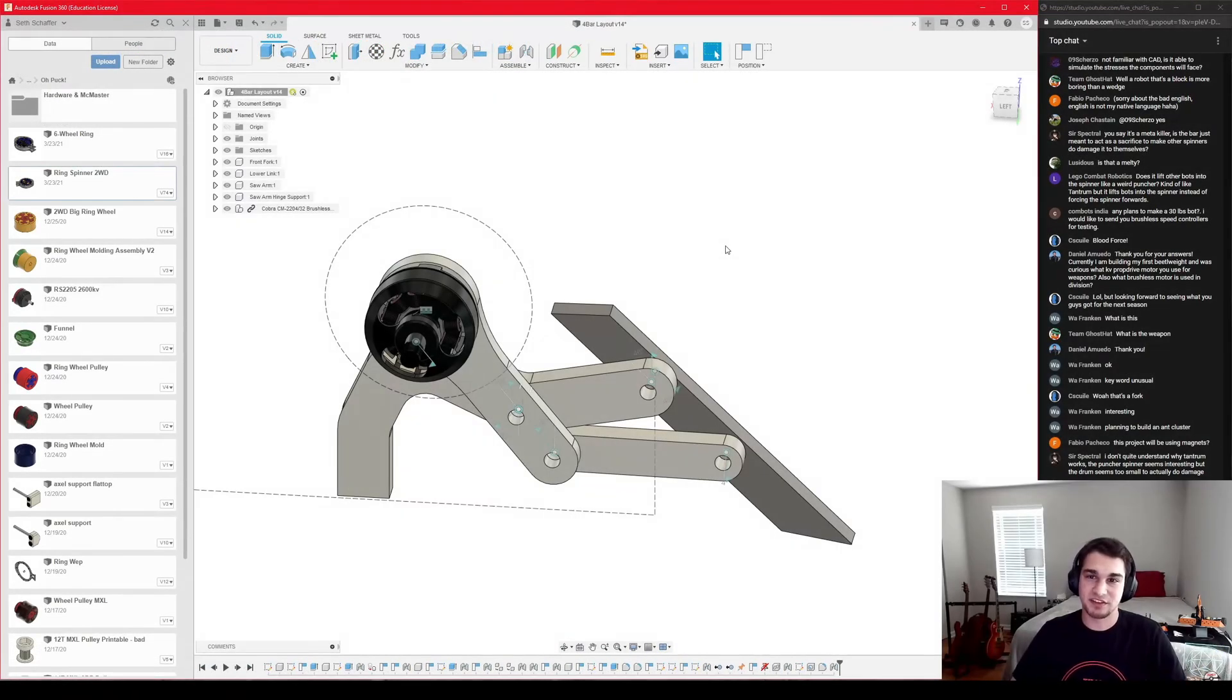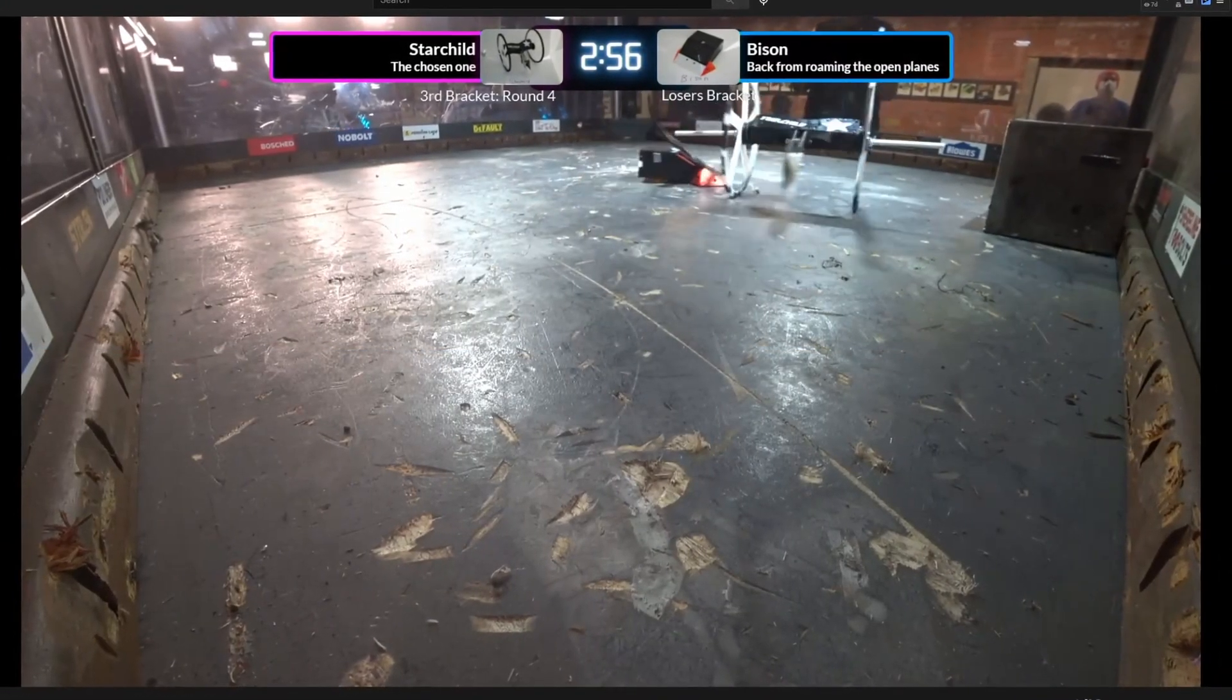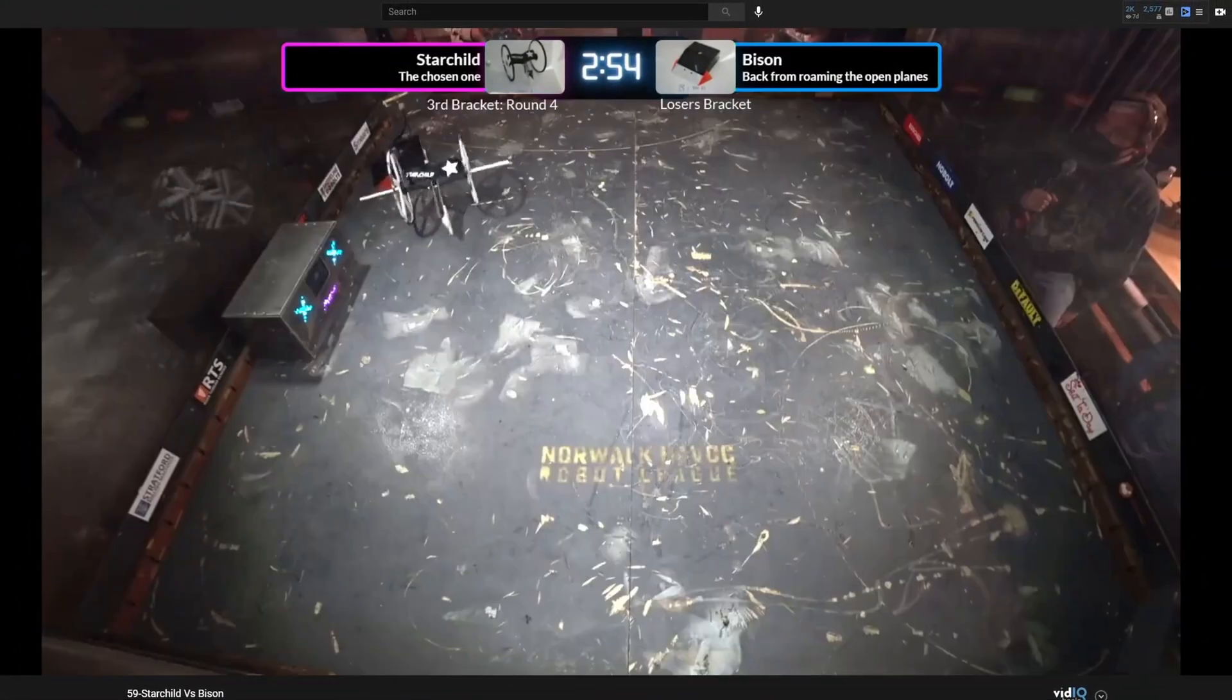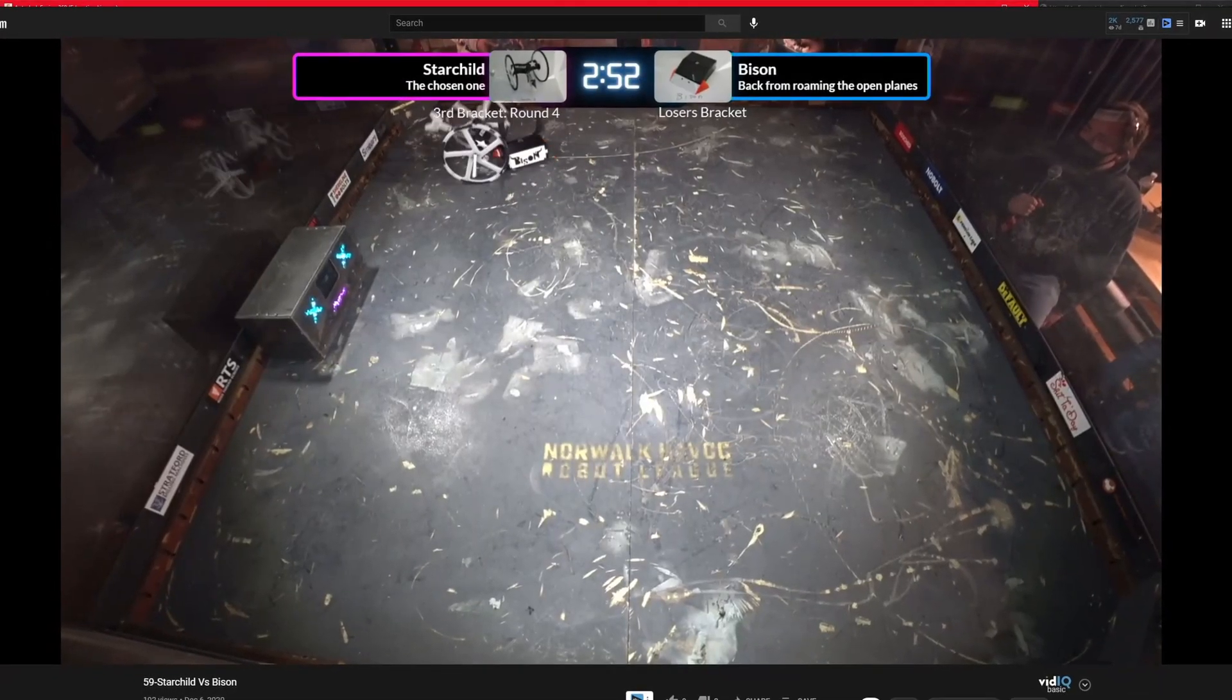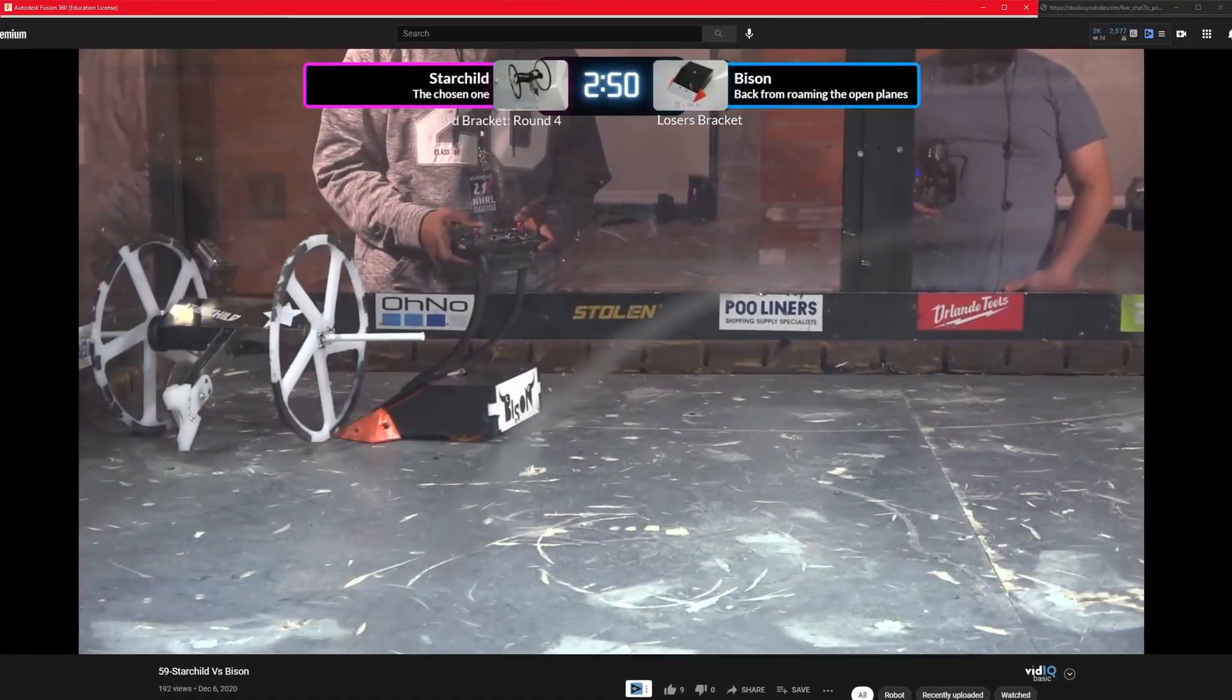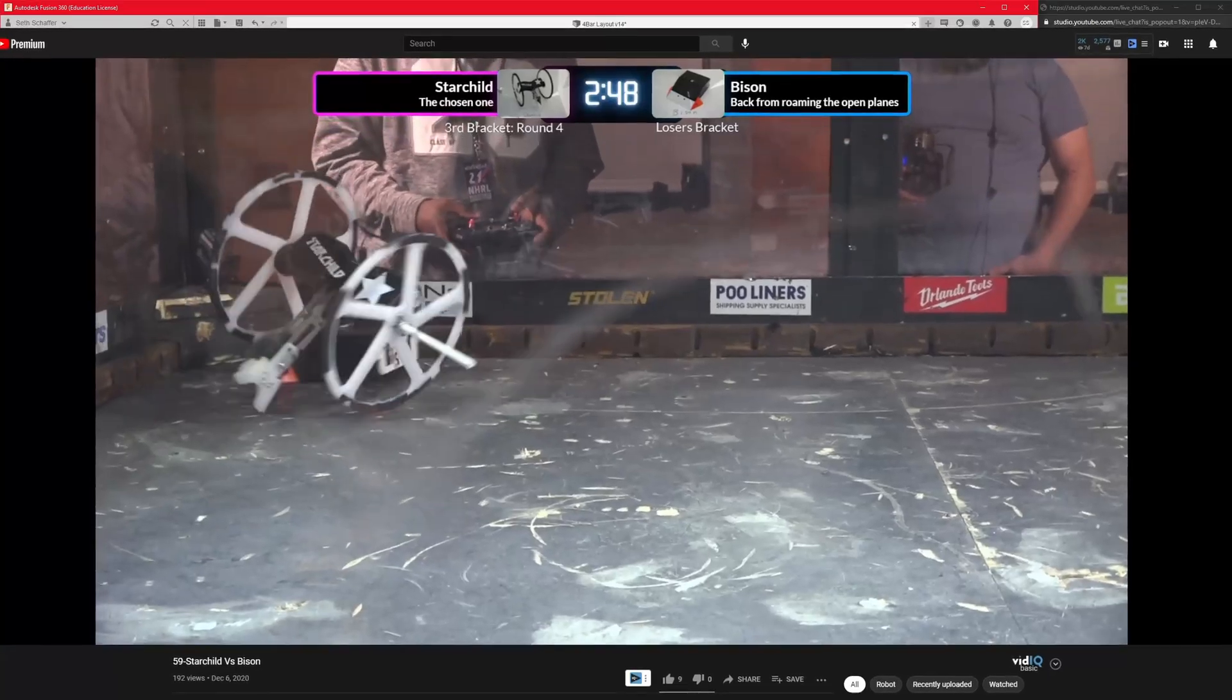What my idea is is that I realized that a lot of people now in the Beetle weight class for Norwalk Havoc are making plans for Starchild, because Starchild has this thwacking overhead spinner and that is probably the most powerful top attack weapon in the class right now.